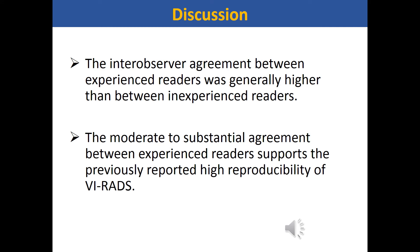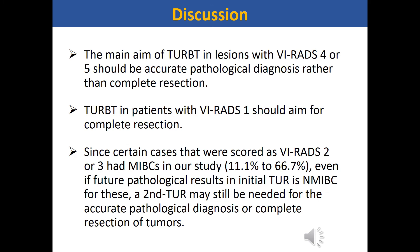The inter-observer agreement between experienced readers was generally higher than between inexperienced readers. The moderate to substantial agreement between experienced readers supports the previously reported high reproducibility of VRATS. We considered that the main aim of TURBT in lesions with a VRATS 4 or 5 should be accurate pathological diagnosis rather than complete resection. TURBT in patients with VRATS 1 should aim for complete resection. Since certain cases scored as VRATS 2 or 3 had MIBCs in our study, even if future pathological results of initial TUR show NMIBC, a second TUR may still be needed for accurate pathological diagnosis or complete resection.